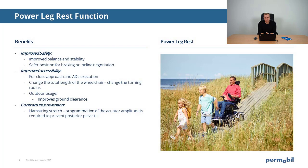The Power Leg Rest function can improve accessibility. In the shortest position, it allows for the closest approach and ideal execution. Changing the angle of your Power Leg Rest changes the total length of your wheelchair, meaning it also changes the total turning radius. Increasing the angle of your Power Leg Rest during outdoor usage improves ground clearance and provides better access to rough terrain.